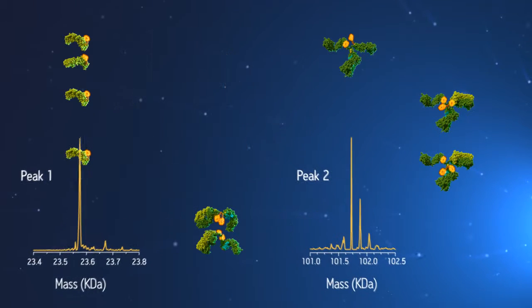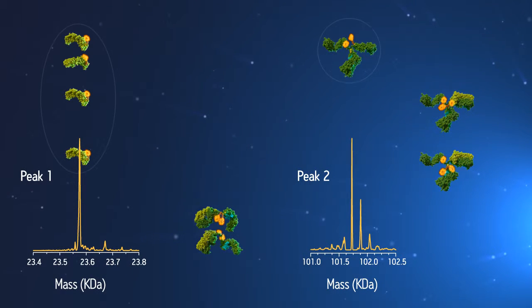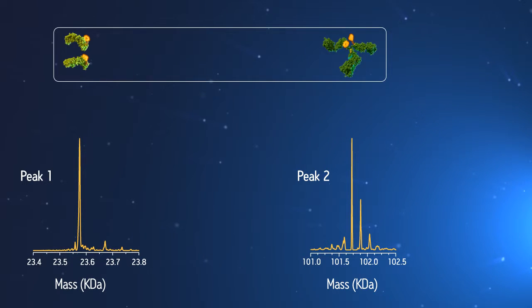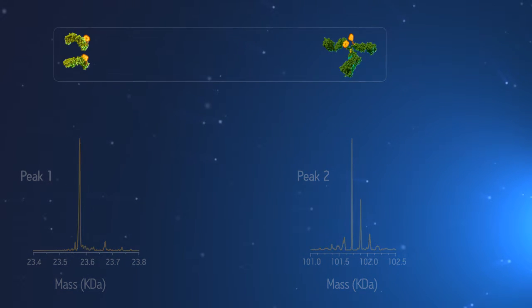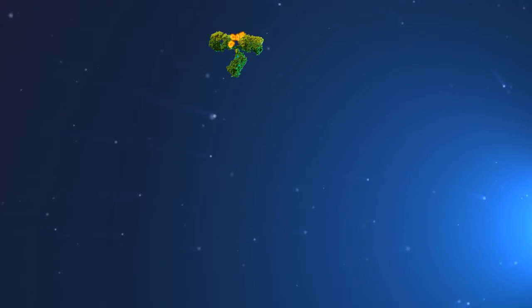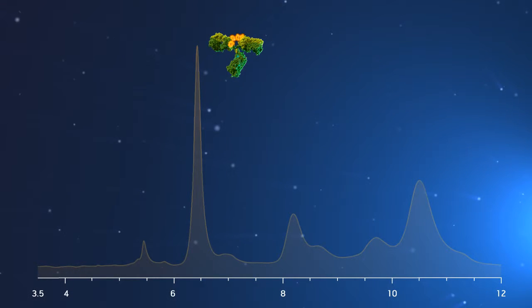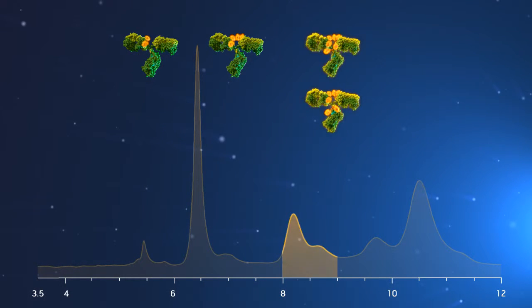The MS of the peaks reveals masses that match these two fragments. Only one isomer for a DAR of four has these chains, so we have positively confirmed this isomer. By the same approach, we can systematically determine the isomers present in other peaks.